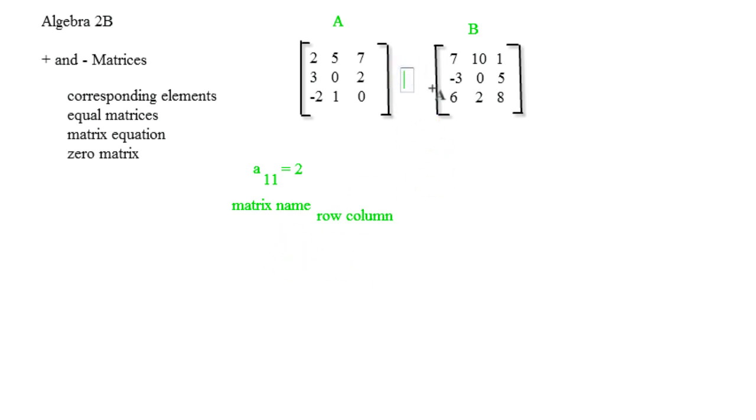Now, if we add them, we're going to be adding corresponding elements. I'm not going to work with it much because I know we all know how to work with addition, but you would add 2 and 7 and put it in the first row, first column spot, and you would complete that for all of them.